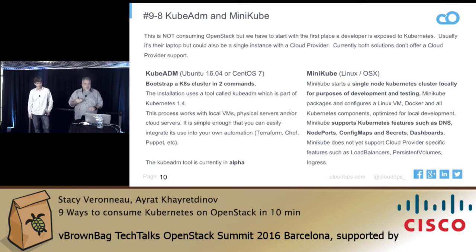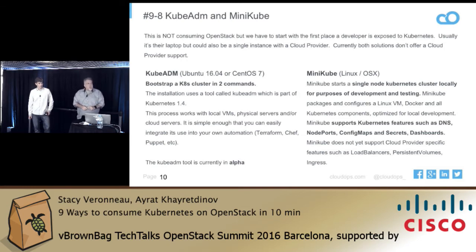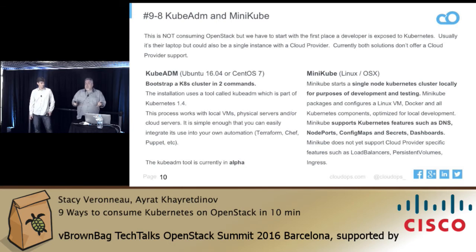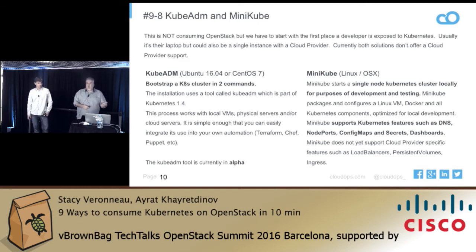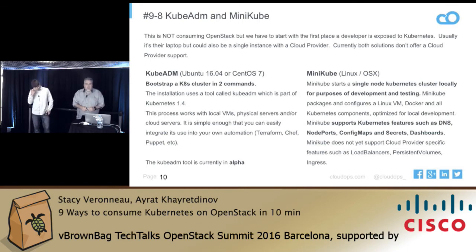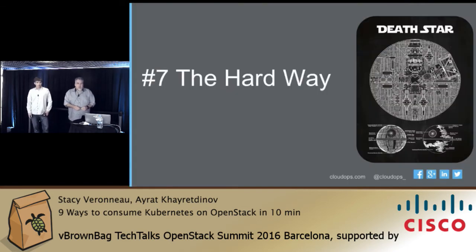On the other side is Minikube. Minikube is awesome on the laptop to get you going — it gets you almost everything you need to start using Kubernetes. It's missing a few things like load balancers, persistent volumes, and cloud providers. So if you really want to use it on OpenStack, just put it on an instance and let it go.